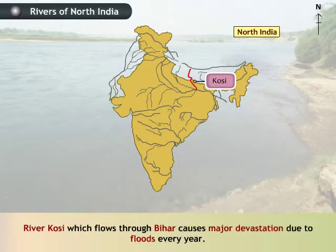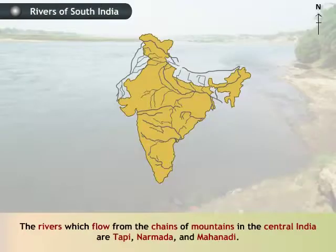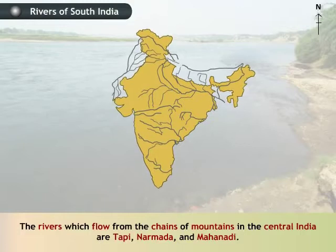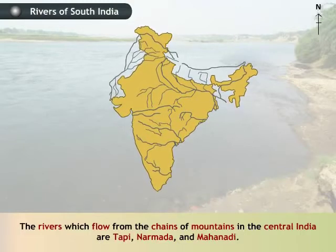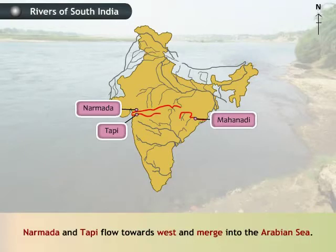River Kosi, which flows through Bihar, causes major devastation due to floods every year. The rivers which flow from the chains of mountains in central India are Tapti, Narmada and Mahanadi.